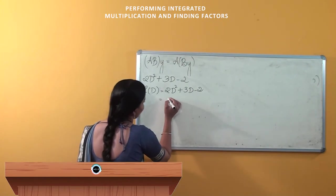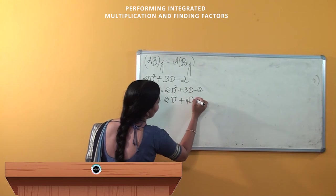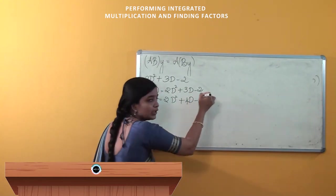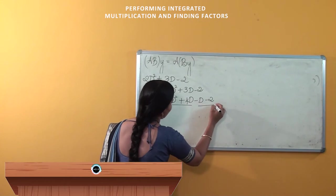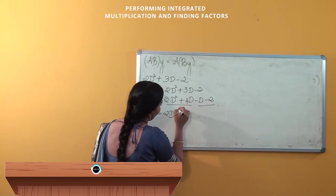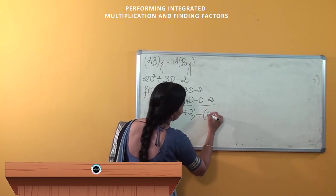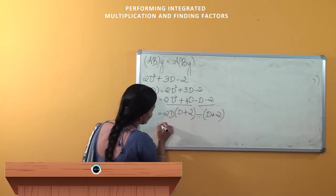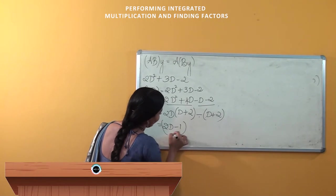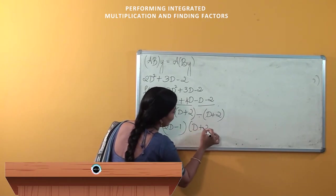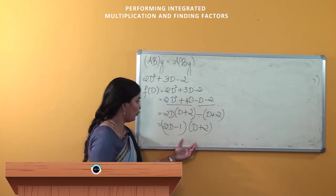The expression becomes 2D² + 4D − D − 2. Grouping gives 2D(D + 2) − 1(D + 2), which factors as (2D − 1)(D + 2). In this way, we can factorize the differential operator as a quadratic expression.